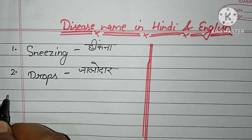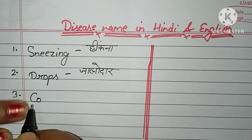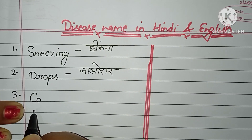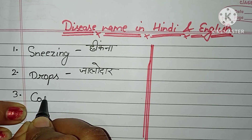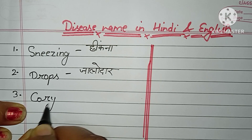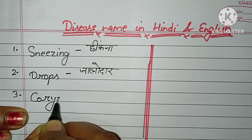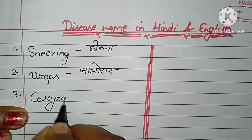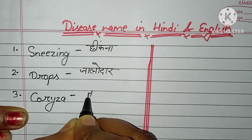Number three: Coryza. C-O-R-Y-Z-A. Jukam.